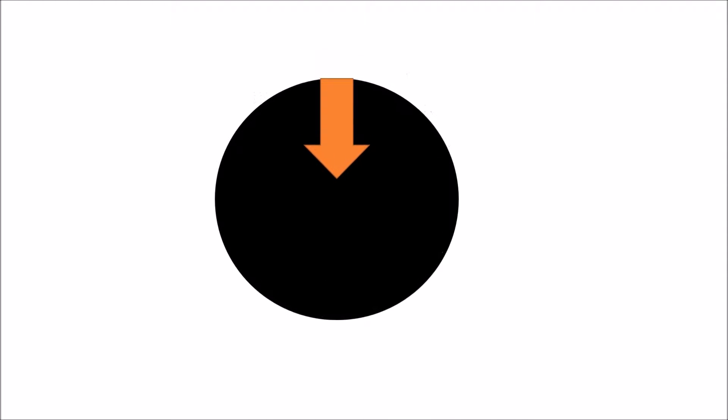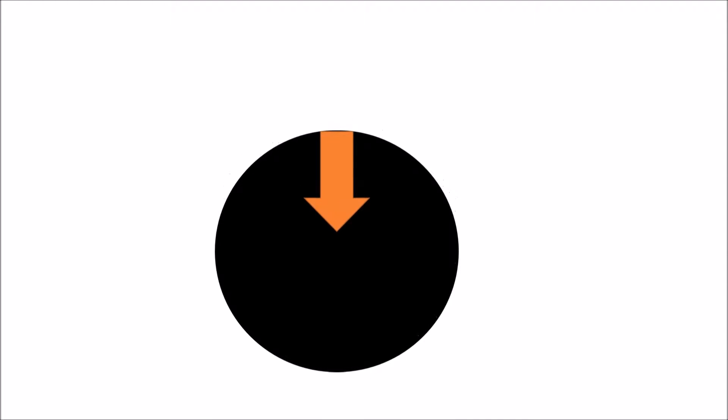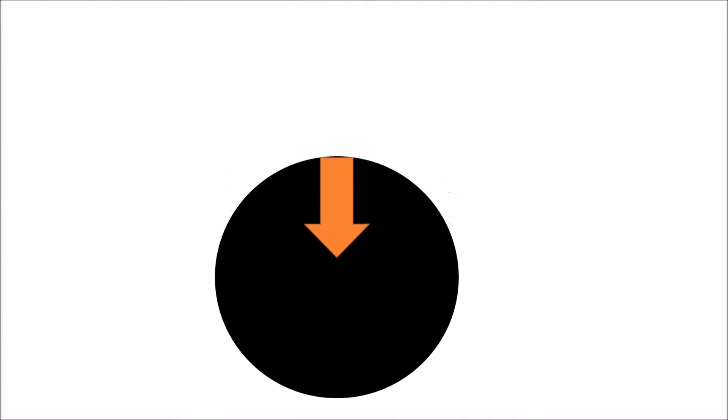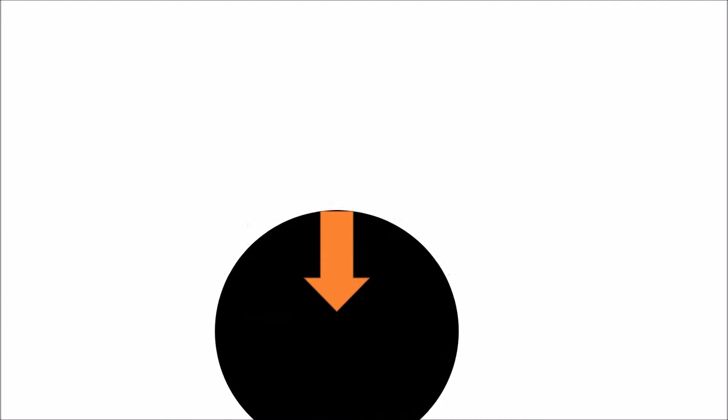Inertia is the idea that an object in motion will always try and stay in motion, and that's what the ball experiences as it falls. It wants to keep moving down, but the ground is in the way.